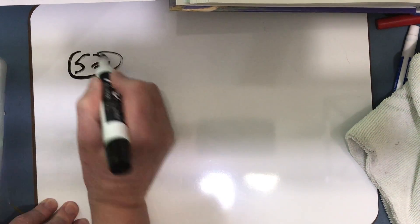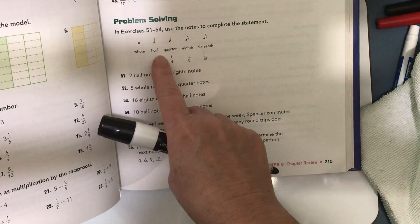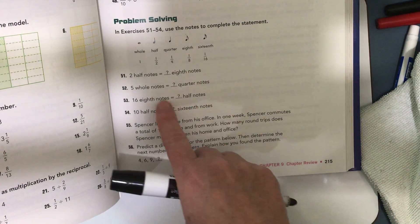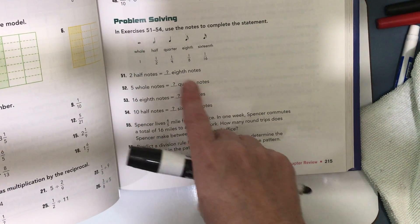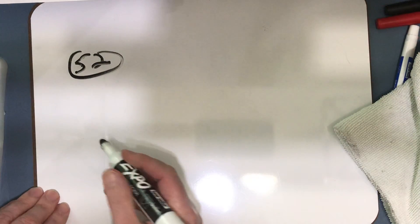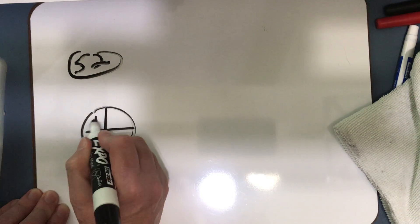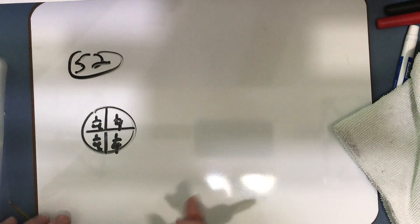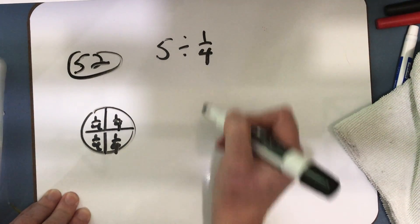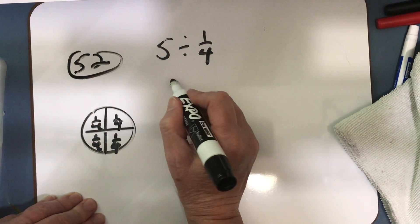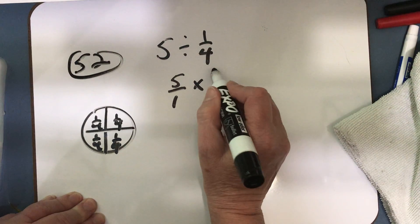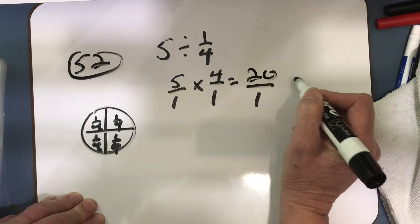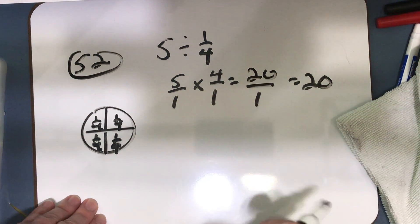You are going to do the odd problems. Now let's get down to the word problems. I'm going to do number 52 with you. We have some music notes here: whole notes, half notes, quarter notes, eighth notes, and sixteenth notes. Number 52 says 5 whole notes equals how many quarter notes? A quarter note is 1/4, and it takes 4 of them to make a whole note. So we take 5 divided by 1/4 to see how many quarter notes are in 5. I solve that by doing 5/1 times the reciprocal of the divisor, which gives 20/1, equals 20. So there are 20 quarter notes in 5 whole notes.